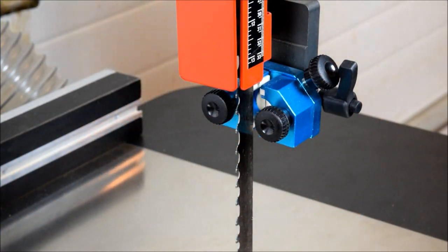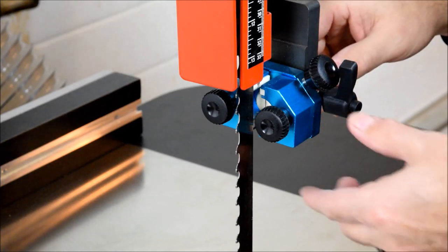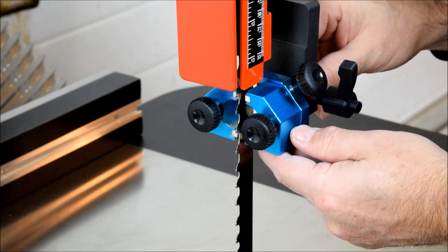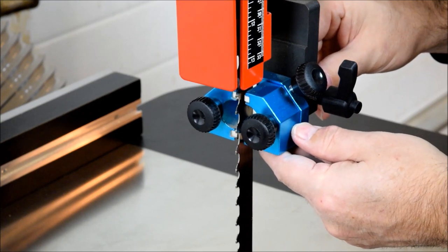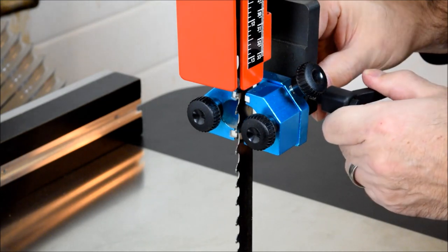Okay, we've got the resawing blade on the bandsaw. We've set the lower guides and now we just need to adjust the upper guides. First thing I like to do is bring the thrust guide so it just barely touches the back of the blade. Go ahead and lock the knob in.